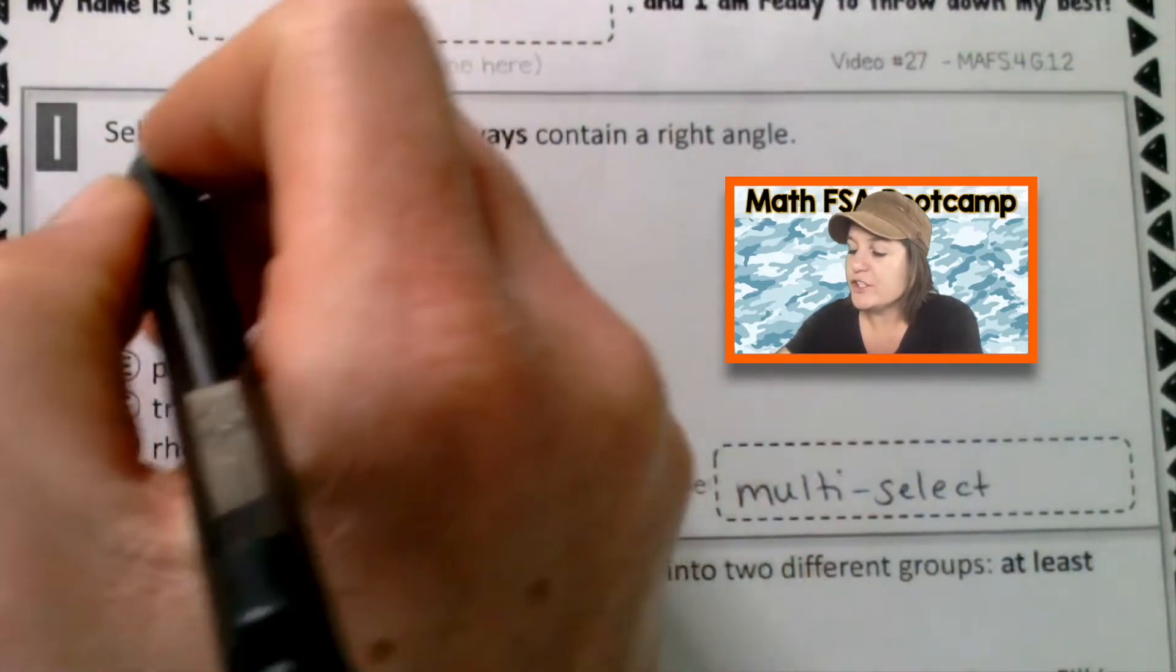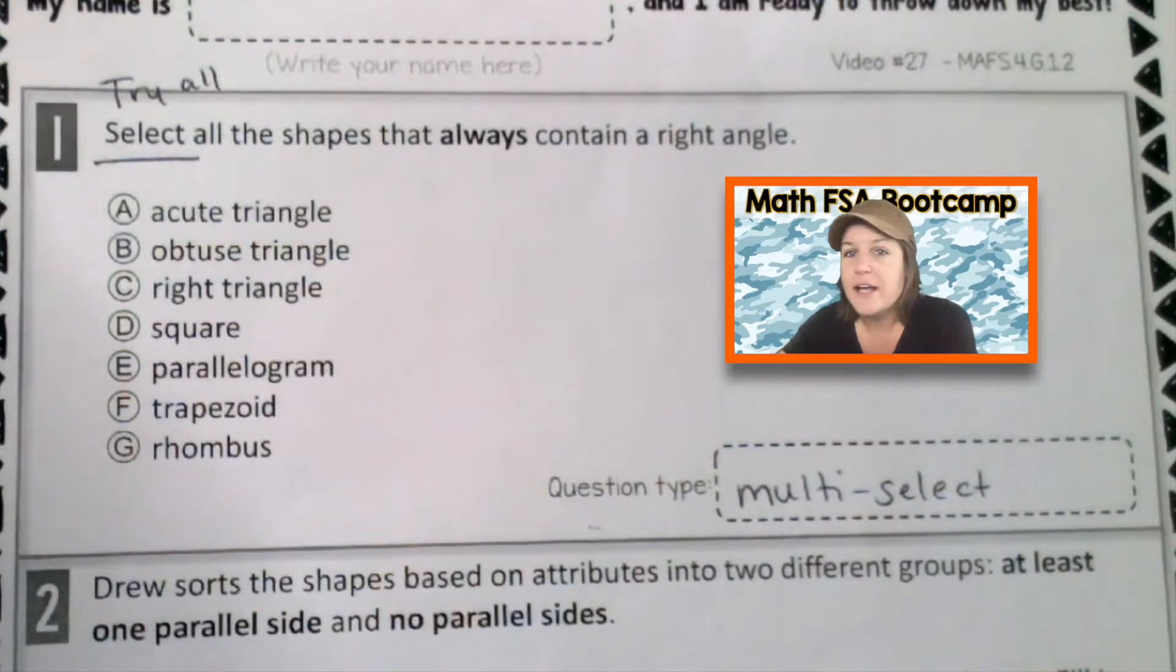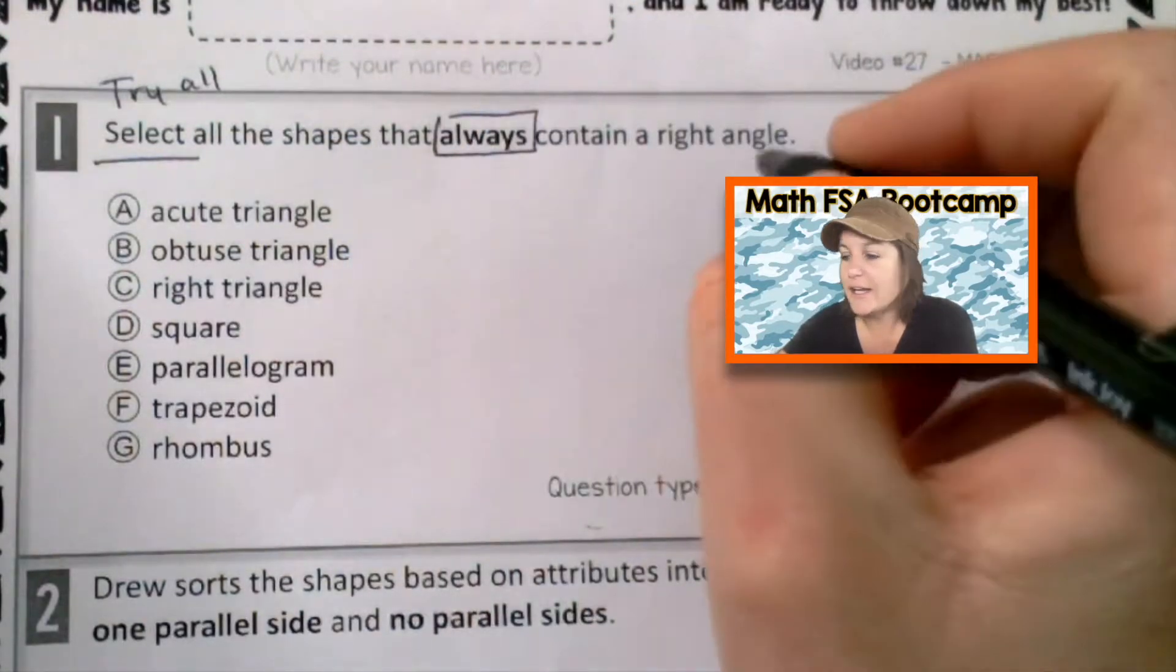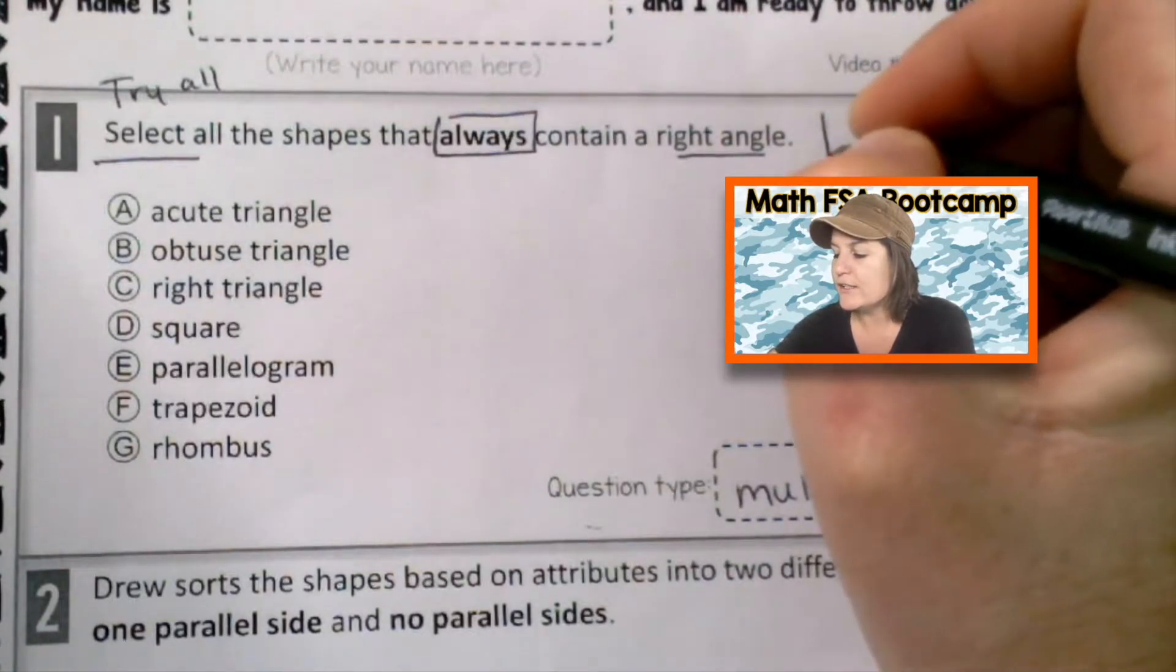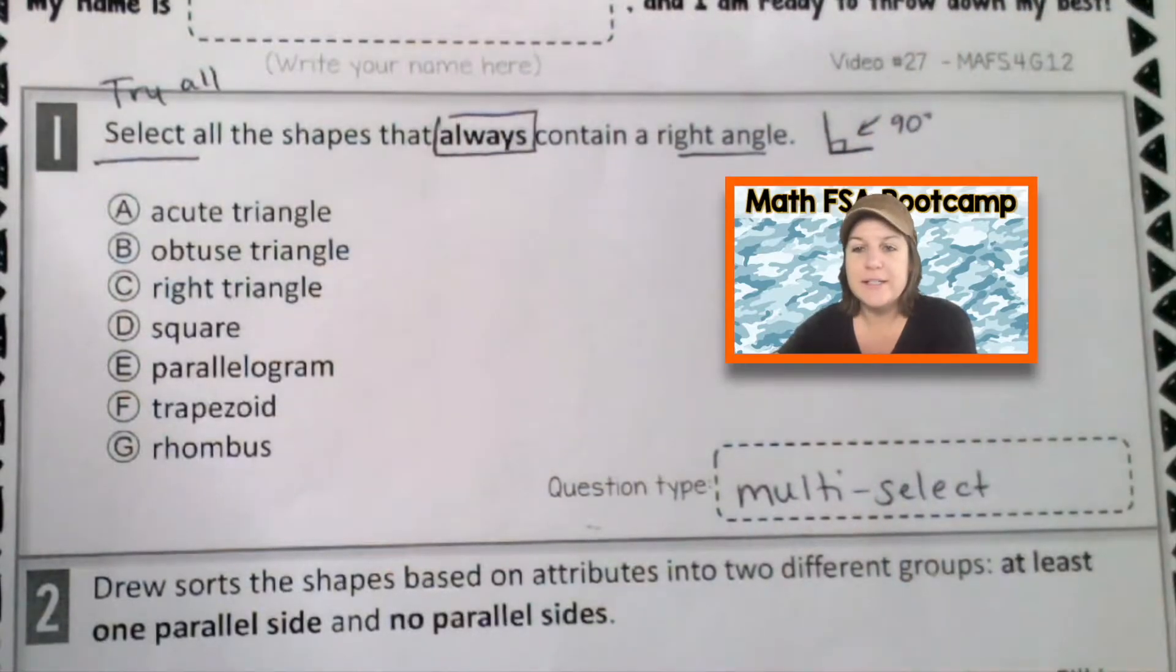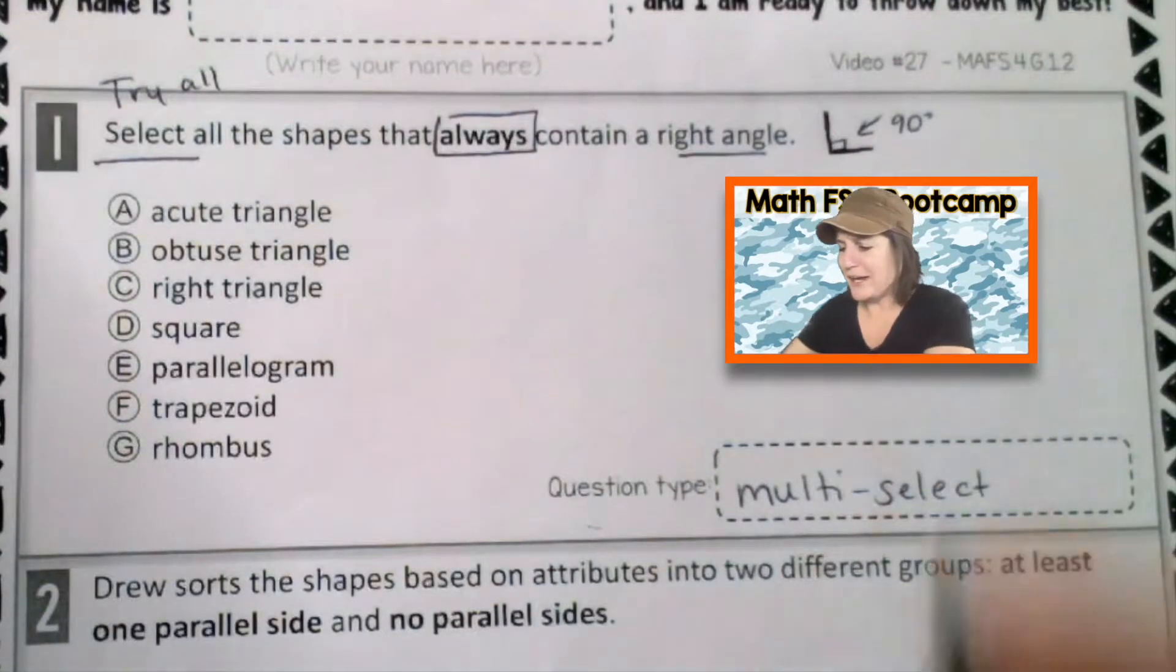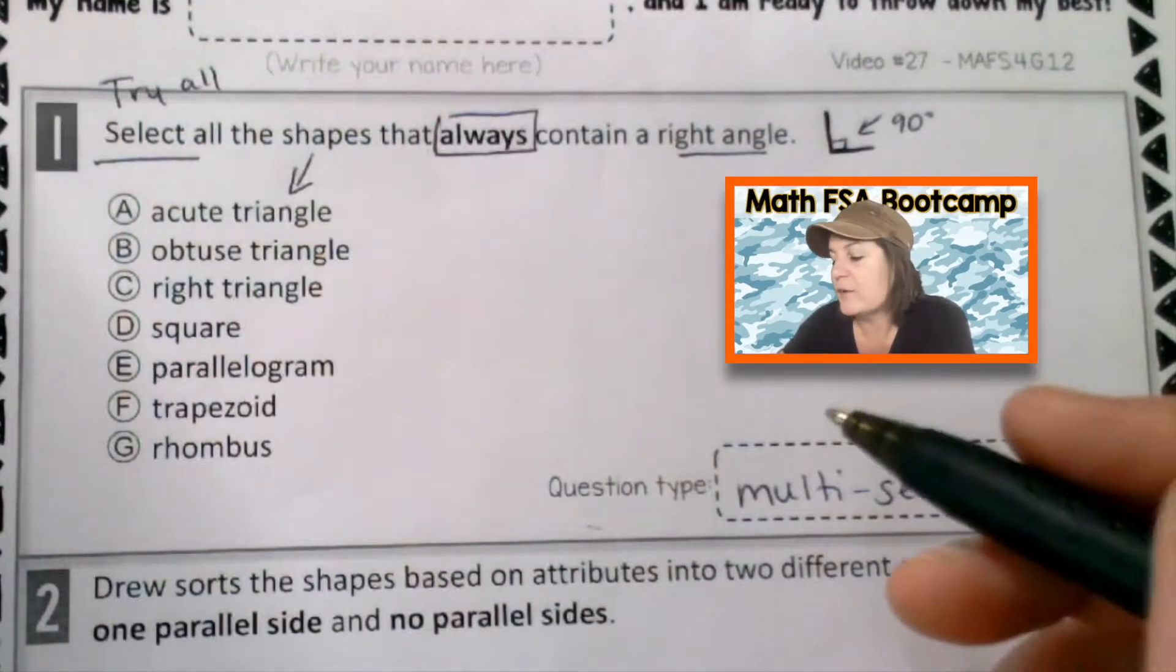Select all the shapes that always contain a right angle. And we know that a right angle is a square corner or 90 degrees. Kind of looks a little obtuse from your angle, but let's imagine that it is a right angle. I'm trying to make it really good and right for you. So here's the shapes right there. We have to select the ones that always contain a right angle.